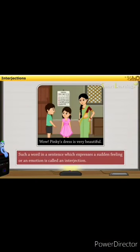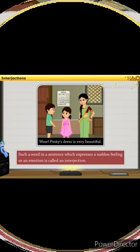Look at the given example. First: Wow, Pinky's dress is very beautiful. In the given sentence, the word 'Wow' expresses a sudden feeling. Wow achanak mehsus karanwali pavna noh prakat kardeya. Such a word in a sentence which expresses a sudden feeling or an emotion is called an interjection. Ehoji word, jo waag which achanak mehsus kiti pavna, jaha upav noh prakat kardeya han, onna noh interjection kandeya han.